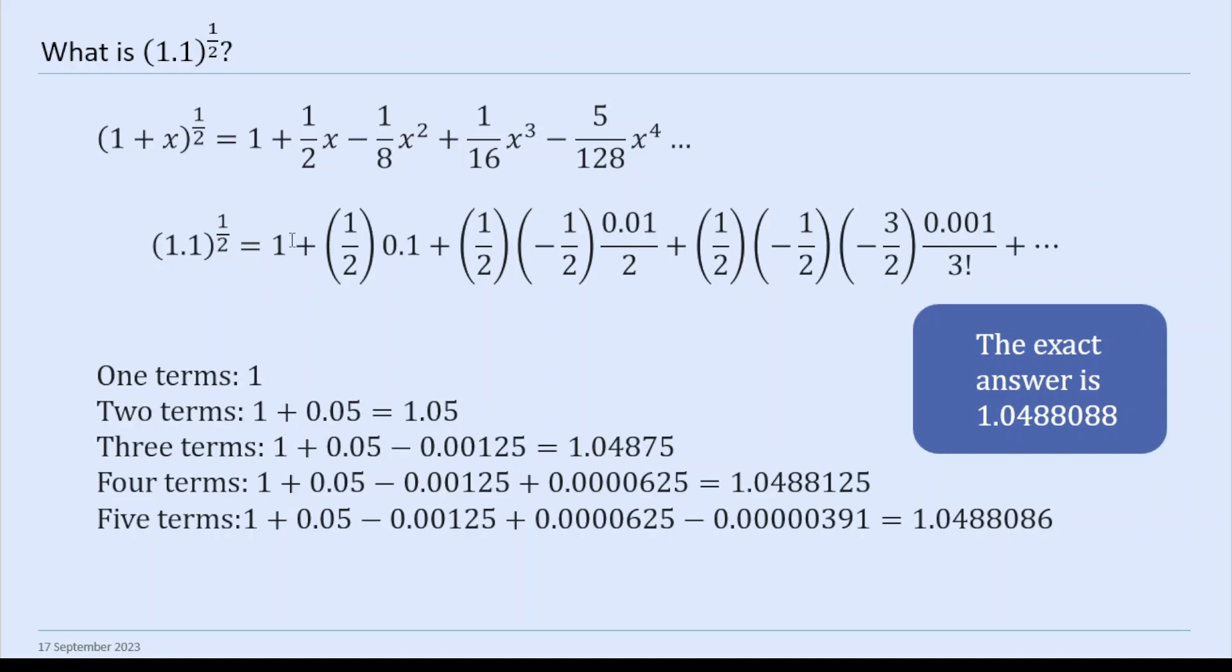If you just use one term here, you get 1. You see, the more terms we use, the closer we get. If you use two terms like this, you get to 1.05. It's not that far off, actually. If you use three terms, 1.04875. So correct to 4 sig figs. Then if you use four terms, it's not that many terms, 1.0488125. So really close. So five sig figs.